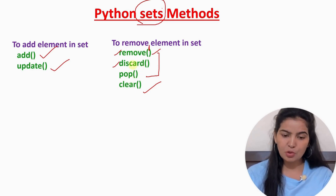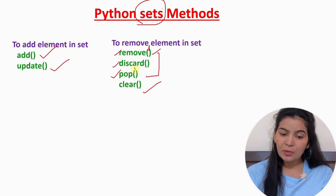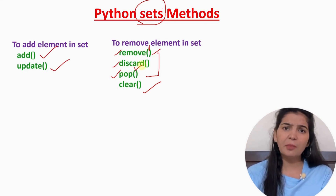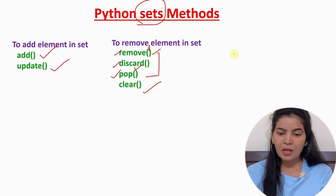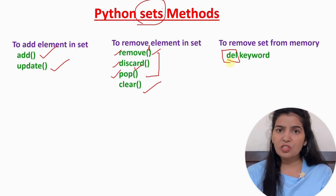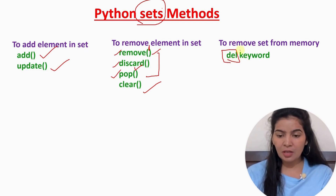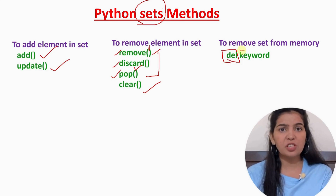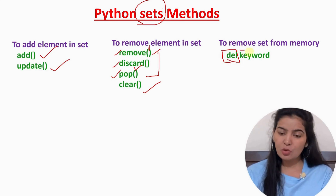So, this is the difference between these two methods. The pop method will not accept any argument — that means it will remove any random item from the set. Now, say if we want to remove the set from memory, in that case we can use the del keyword. We can use the del keyword to remove any object from memory. Whatever object we give after del, that object will get removed from memory. So if we pass a set here, it will remove the set from memory.